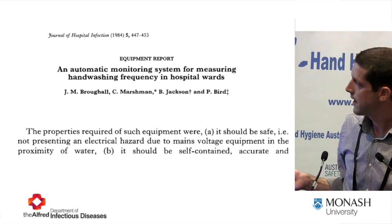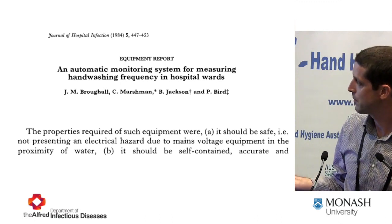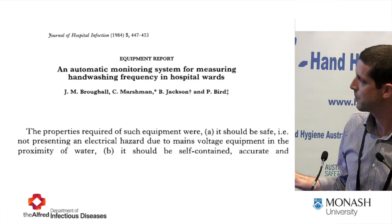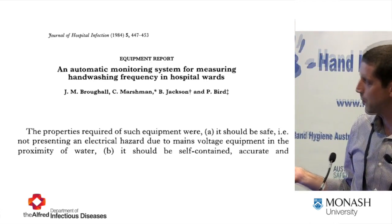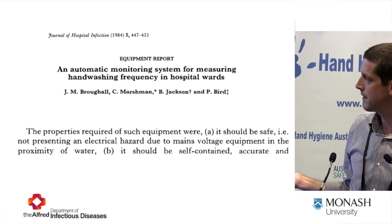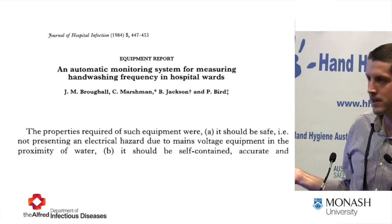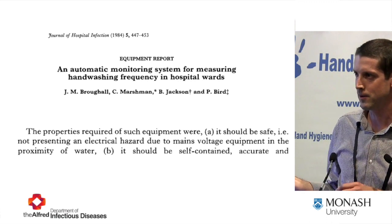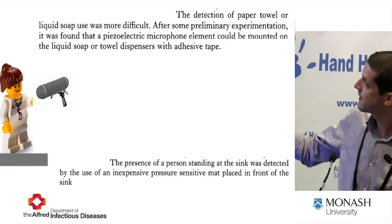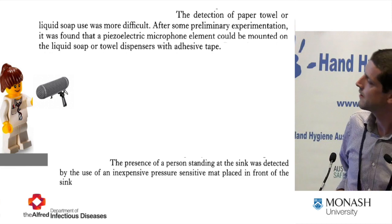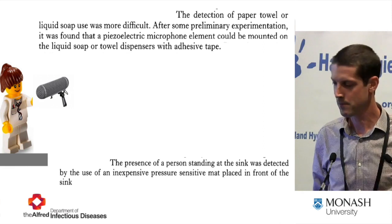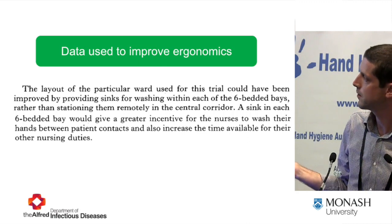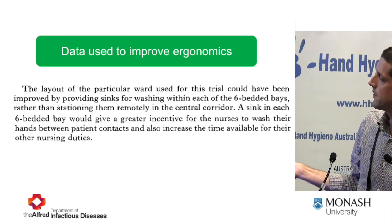They made the important point that they didn't want automated systems to present an electrical hazard by placing equipment near water. What they actually did was work out when a healthcare worker was standing near a sink by putting scales in front of the sink. To detect when they were using a towel or soap, they mounted a microphone — attached with adhesive tape — to detect when noise was being made. They also noted that a sink in each six-bedded bay would give a greater incentive for nurses to wash their hands between patient contacts and increase time for other nursing duties.